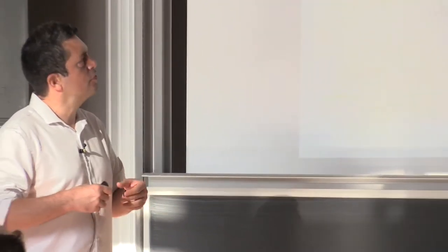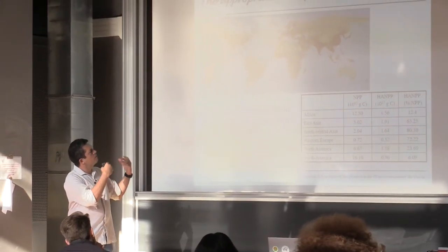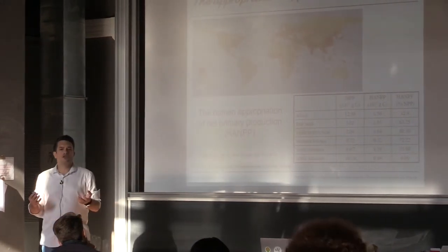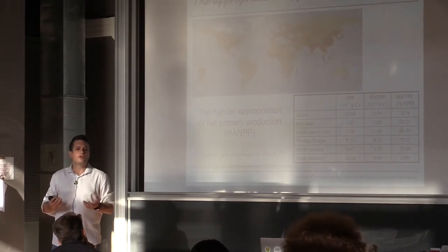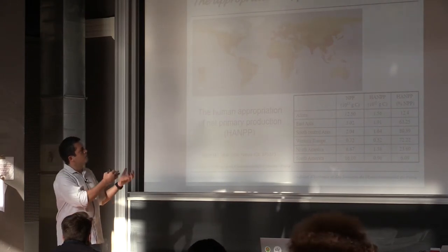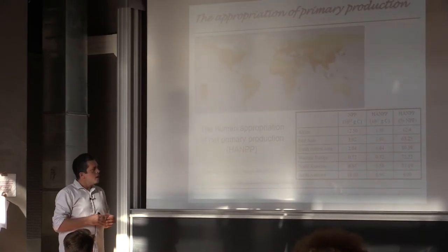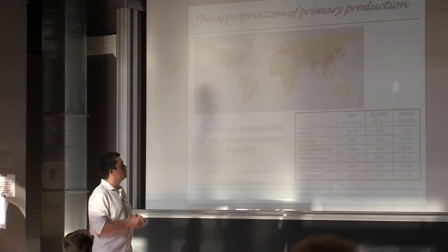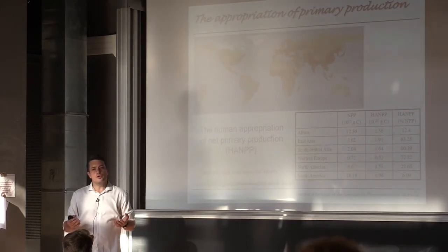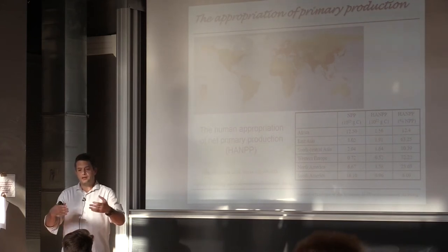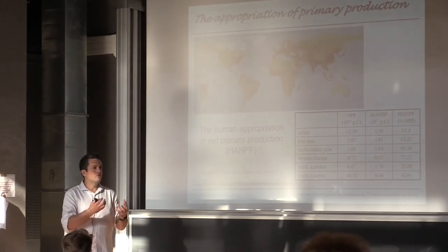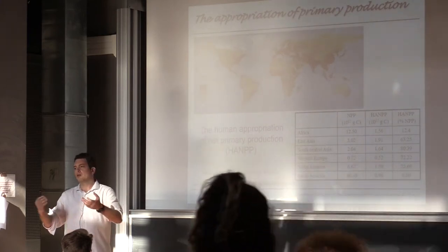This map displays the proportion of primary production appropriated by humans. Primary production is the total quantity of organic matter produced by an ecosystem — basically the growth of plants, the leaves and roots they produce. Depending on the geographic area, humans are taking away from 12% of this primary production in Africa up to 80% in South and Central Asia, essentially because of agriculture. This is a way to measure human impacts on ecosystems and the biosphere.